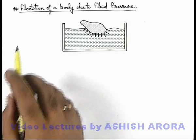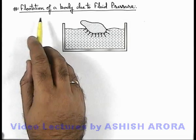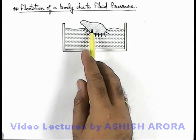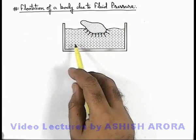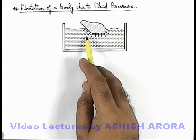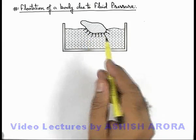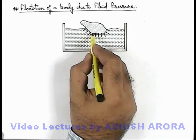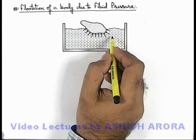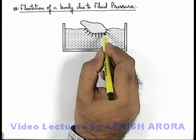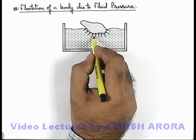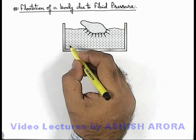Let us discuss the concept of flotation of a body due to fluid pressure. Here you can see a body is floating in a liquid, which is partially submerged in the liquid. In this situation, the portion of the body which is submerged in the liquid — the liquid is going to exert a force at every point normal to the surface of the body due to fluid pressure, which we have discussed.